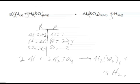That should balance the chemical equation. Let's do a quick check. I have 2Al on the reactant side, 2Al on the product side. I have 6 hydrogens on the reactant side; 3 times 2 gives me 6 hydrogens on the product side. I have 3 SO4 on the reactant side and 3 SO4 on the product side. The equation is balanced. Alright, that's a wrap.